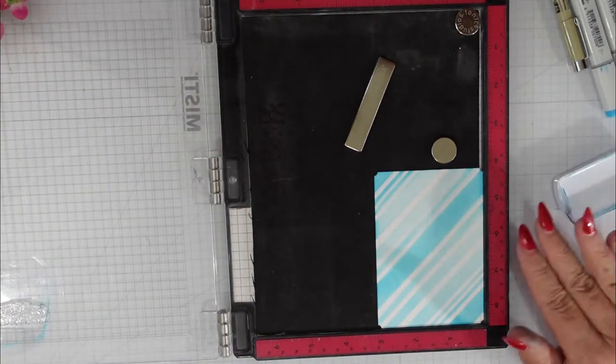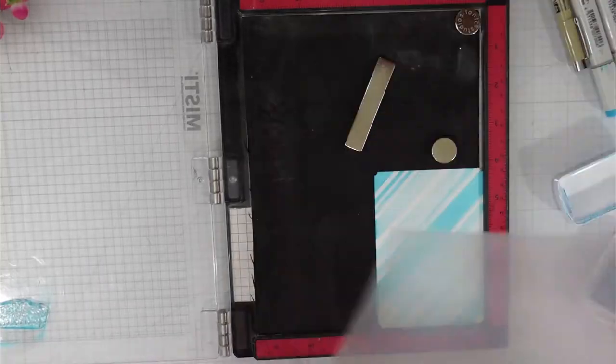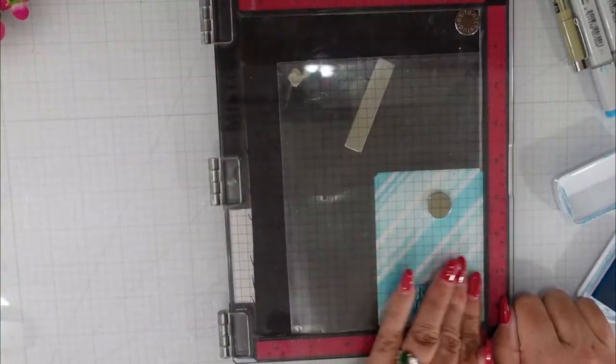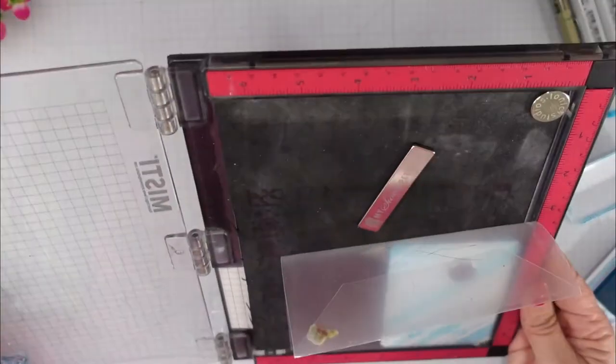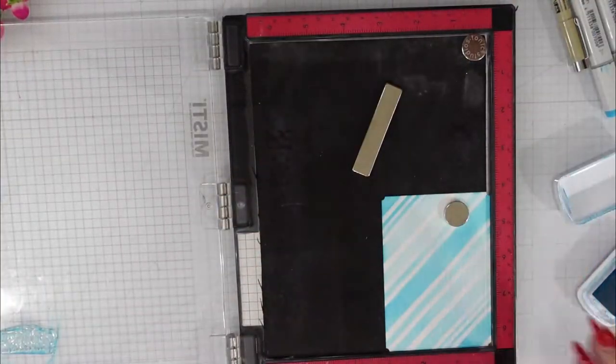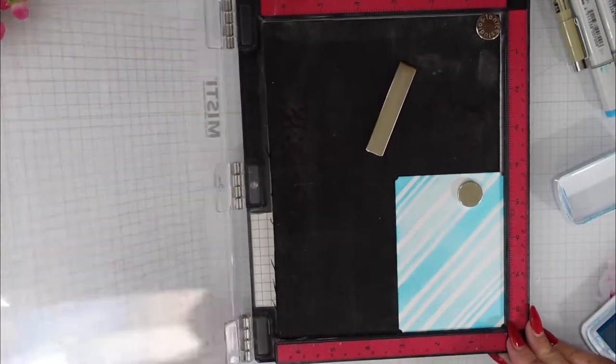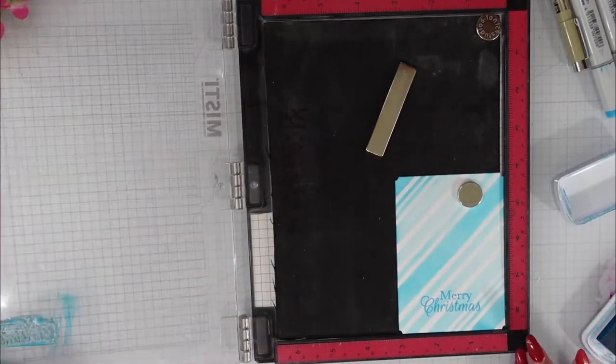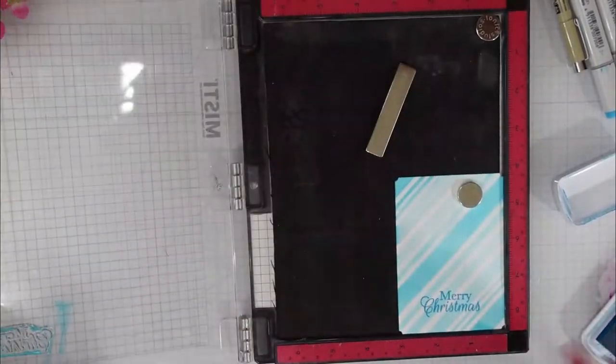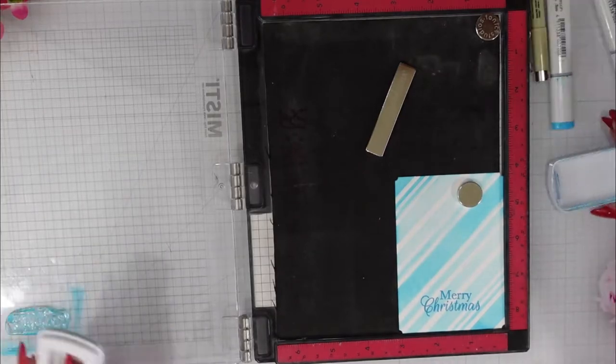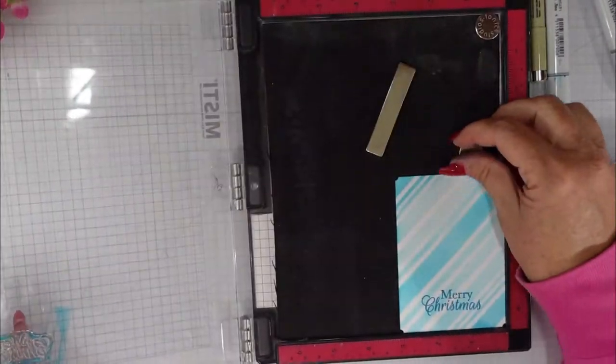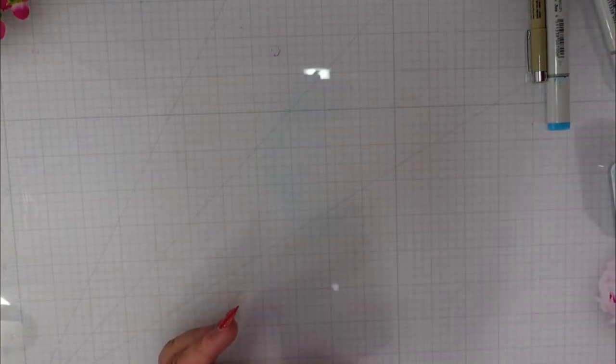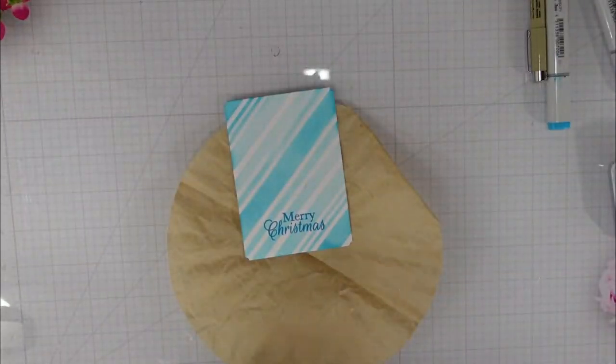And I'm going to use the same Fiesta Blue. So I'm going to stamp this three times. First, I want to make sure that my image is straight, so I just add a piece of plastic over the top of that candy stripe panel and I stamp it. It looks straight to me, so I'm going to go ahead and go on to stamping the cardstock. Once I stamp this the third time, I will do that heat embossing again.